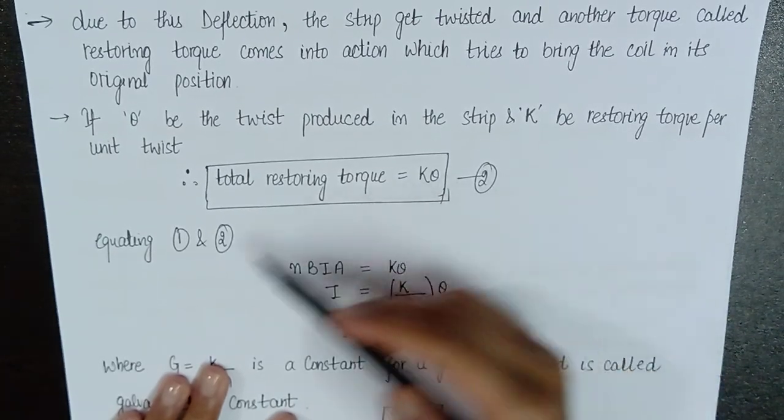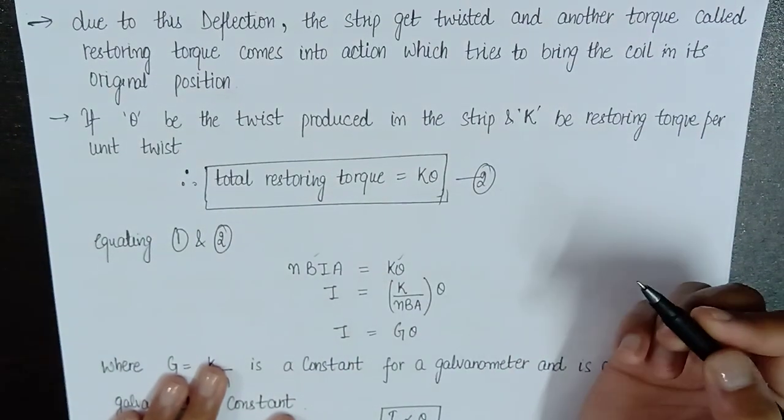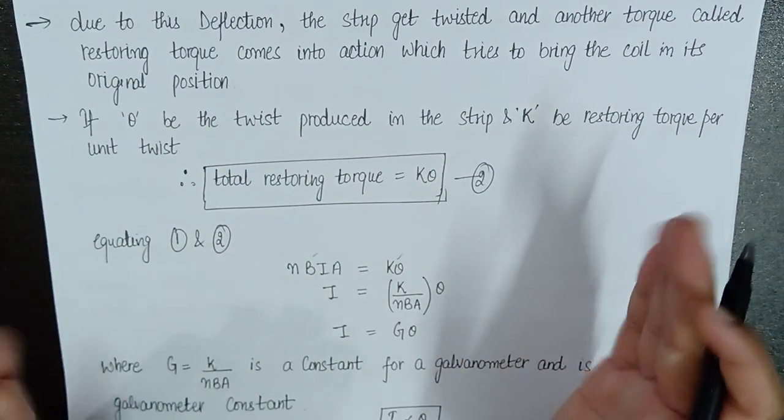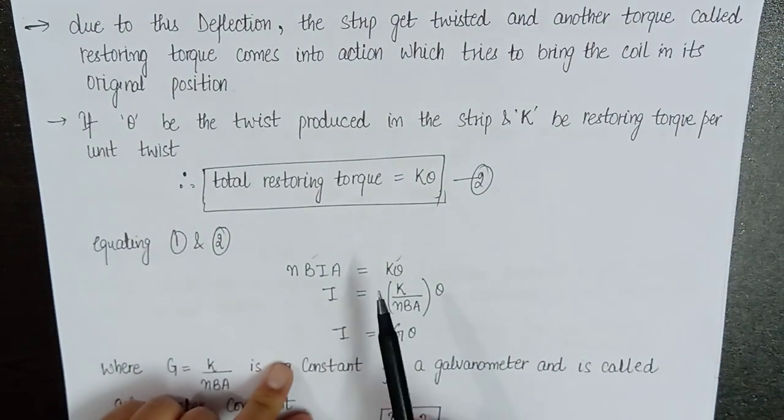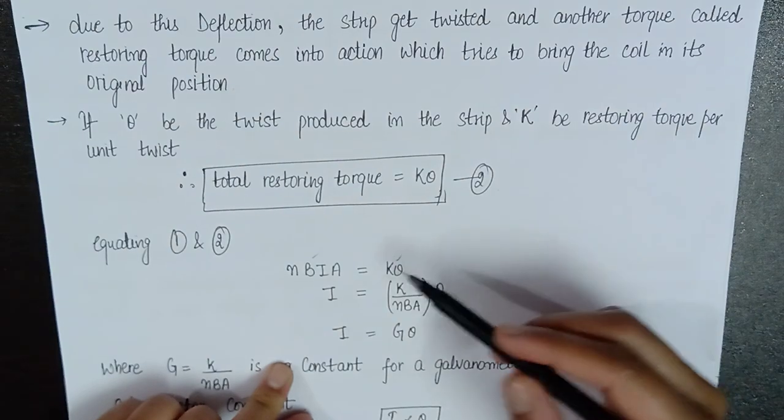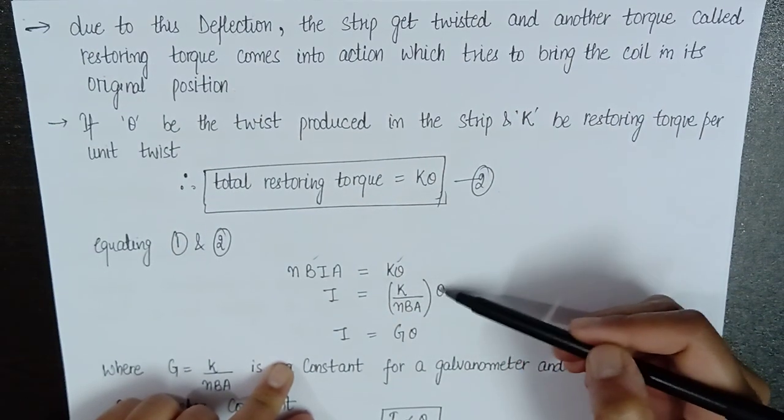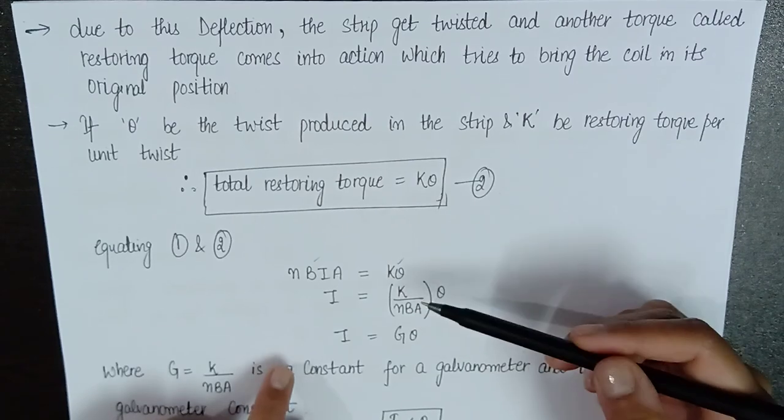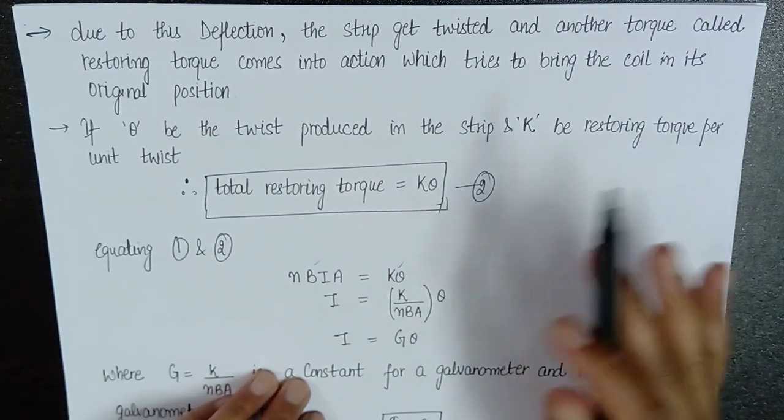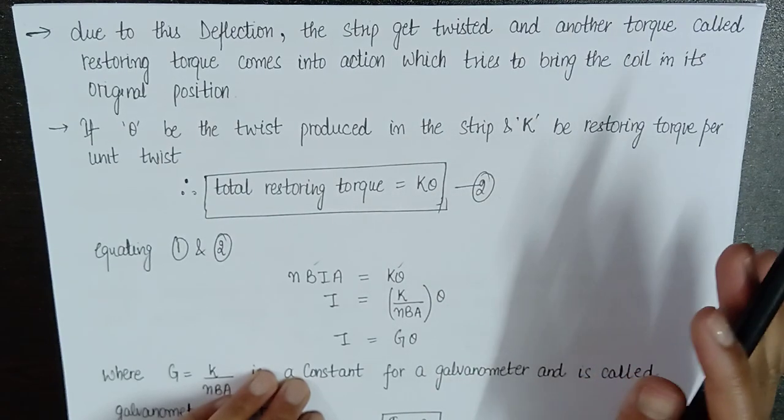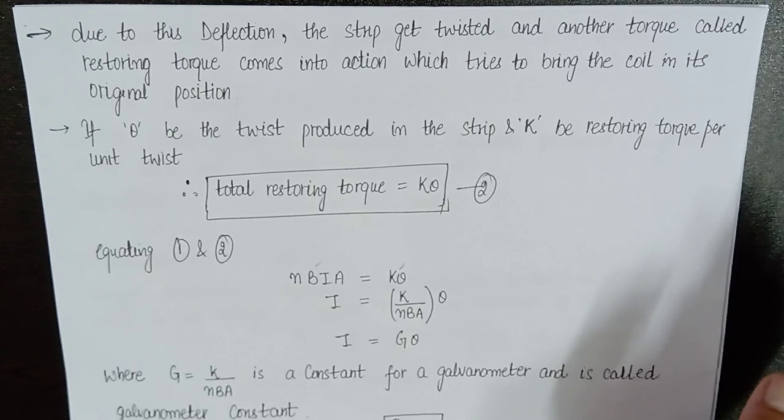Now, if we equate both the initial torque and the restoring torque, then the current value we extract comes out to be I equals K upon NBA times theta. If we look at all these values, what are the constant values? The magnetic field is uniform, it doesn't change. And the number of coils, it is fixed. K is also fixed. It is restoring torque and it is fixed.